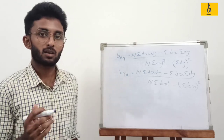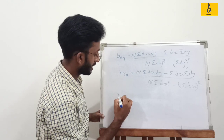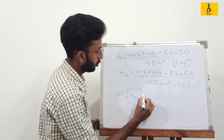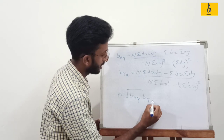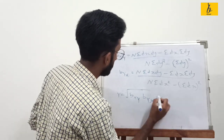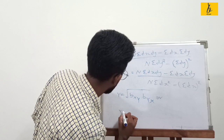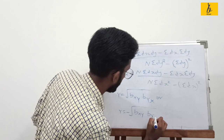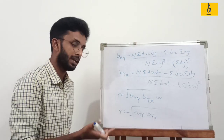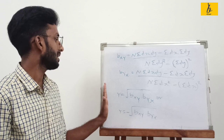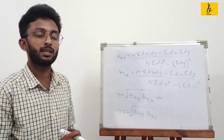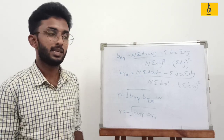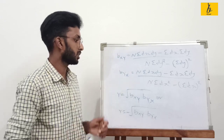Now let's look at correlation. We will call correlation r, which is equal to the square root of bxy into byx, or minus of the square root of bxy into byx. If your correlation signs will not be equal to each other, then you check accordingly.